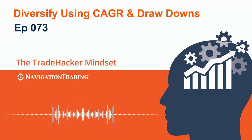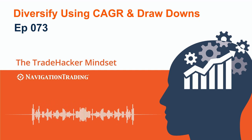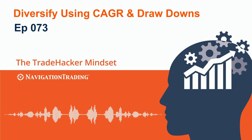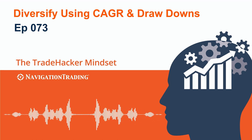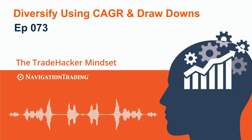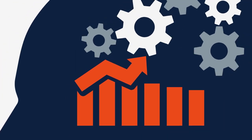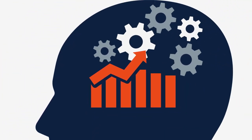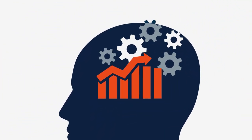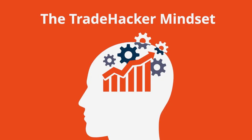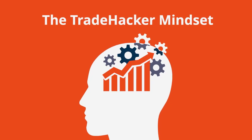Welcome back to the Trade Hacker Mindset. In this episode, I want to talk about how to diversify using compound annual growth versus max drawdown. Trading the markets can be difficult to master and seemingly just out of reach. Professional traders have a secret: trading requires total mental and emotional control. It requires the Trade Hacker Mindset.